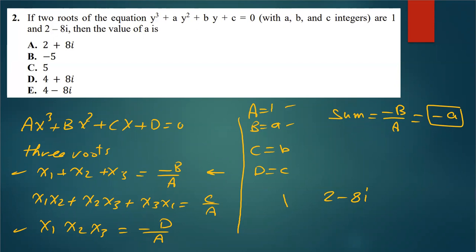In this case, he said that A, B, C are integers, and that means they are rational or real numbers. That means when 2 minus 8i is a root, so the third root should be its conjugate 2 plus 8i.